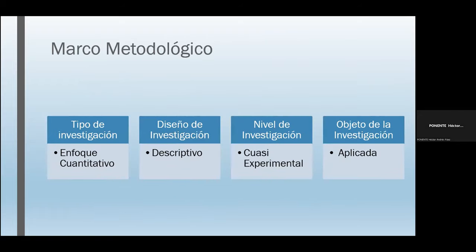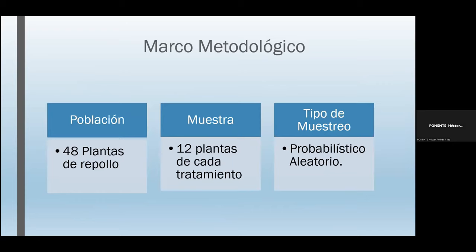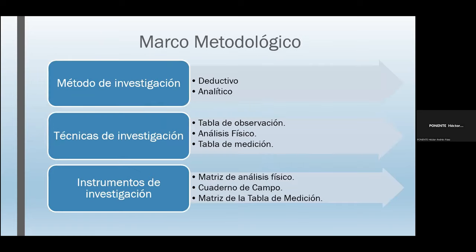En cuanto al marco metodológico, el tipo de investigación fue de enfoque cuantitativo, el diseño fue descriptivo, el nivel fue cuasi-experimental y el objeto fue aplicado. La población contó con 48 plantas de repollo, la muestra fue de 12 plantas por cada tratamiento, con muestreo probabilístico aleatorio. Los métodos fueron deductivos y analíticos. Las técnicas utilizadas fueron tabla de observación, análisis físico y tabla de medición. Los instrumentos fueron matriz de análisis físico, cuaderno de campo y matriz de tabla de medición.